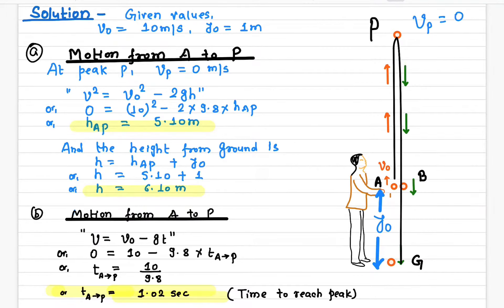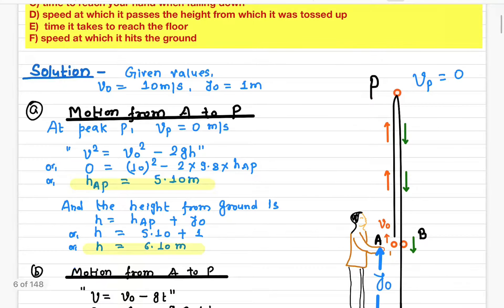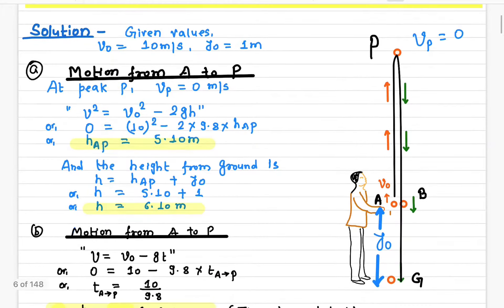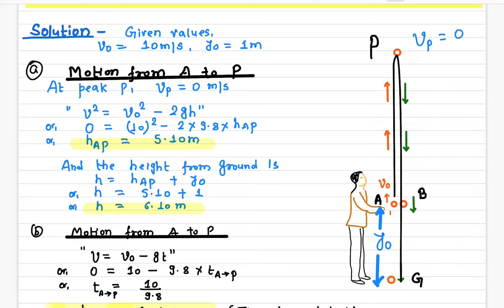The velocity at the starting point is given as 10 meters per second and the height from which it was thrown is one meter. From this information we have to find out: the maximum height the ball reaches from the ground, how long it takes to reach the peak, the total time to return to ground, and the speed of the ball at the ground.